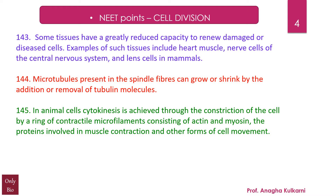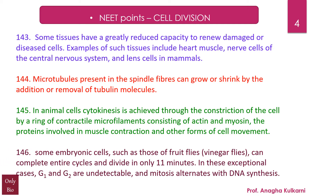Some embryonic cells, such as those of the fruit fly — also called vinegar fly — can complete entire cycles and divide in only 11 minutes. In these exceptional cases, G1 and G2 are undetectable and mitosis alternates directly with DNA synthesis.